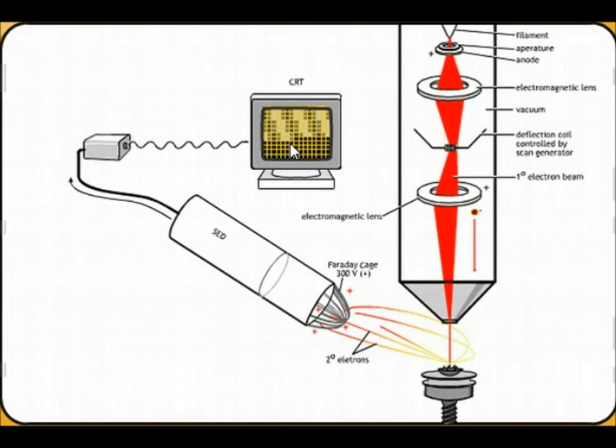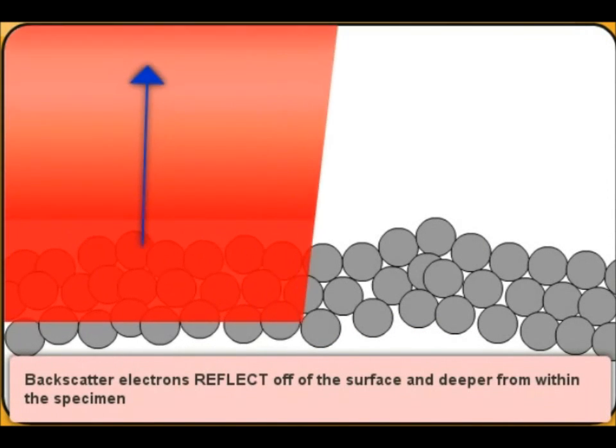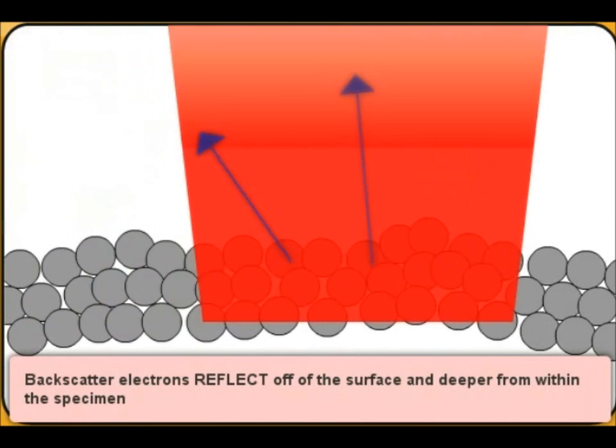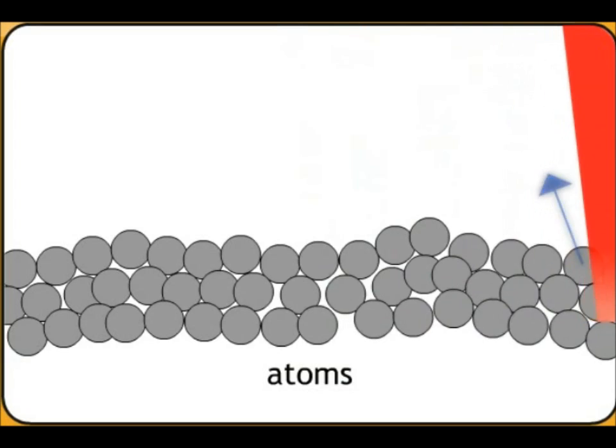Now the second type of electrons are called backscatter electrons. And these electrons actually don't come from the atoms. They actually reflect off the surface. And they actually can come even from deeper down in the specimen. And we have a second detector that can actually detect those.